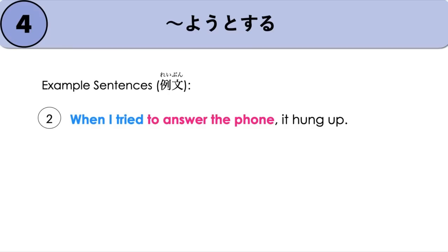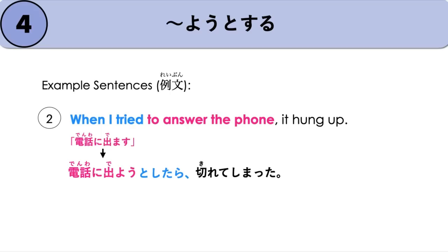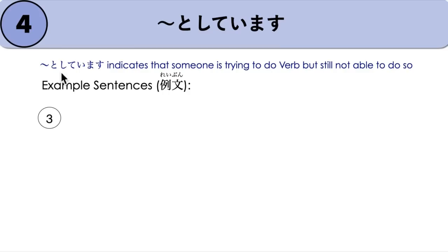Next example: 'When I tried to answer the phone, it hung up.' Denwa ni deyou to shitara, kirete shimatta. Now, if someone is trying to do a verb but still not able to do so, we can use 何々としています — meaning it is ongoing in their head; they have the will but haven't done it yet.